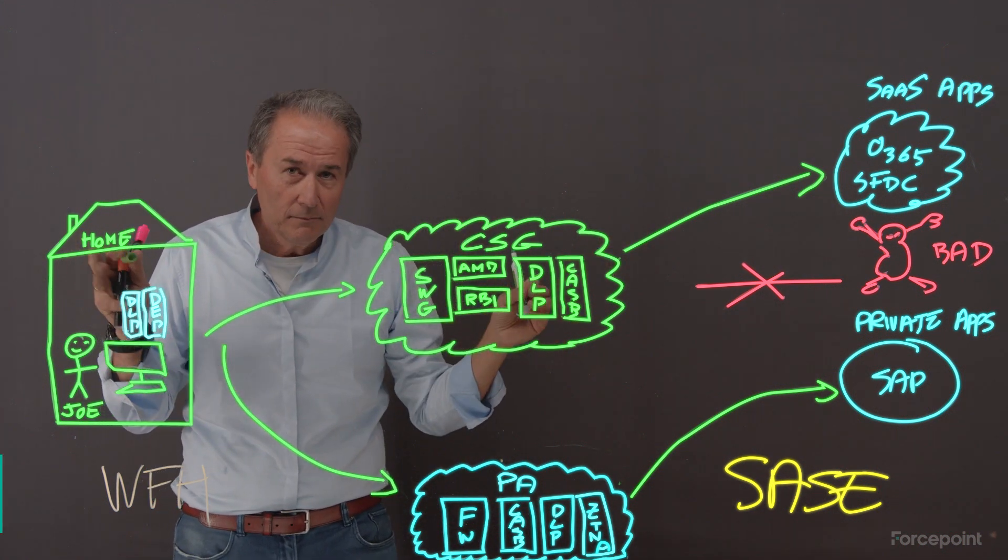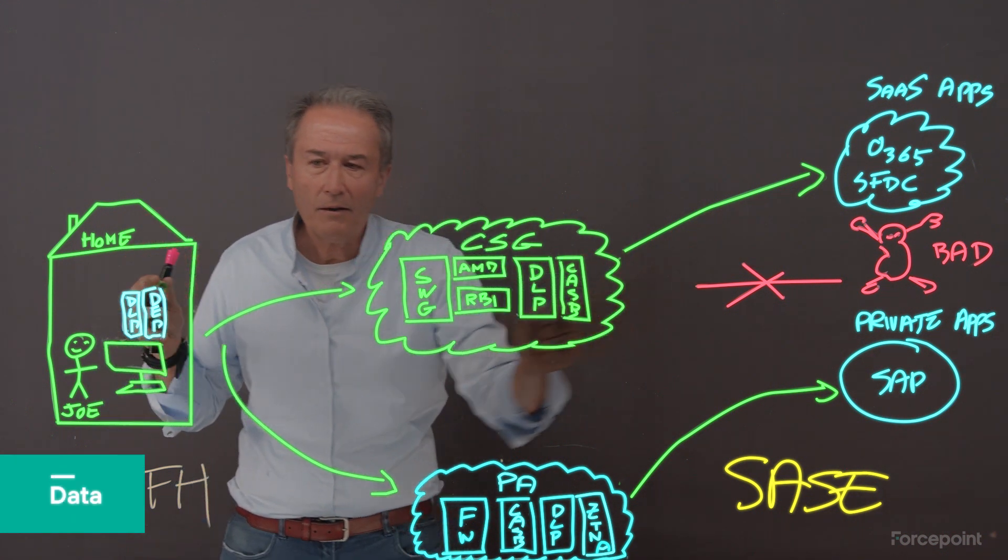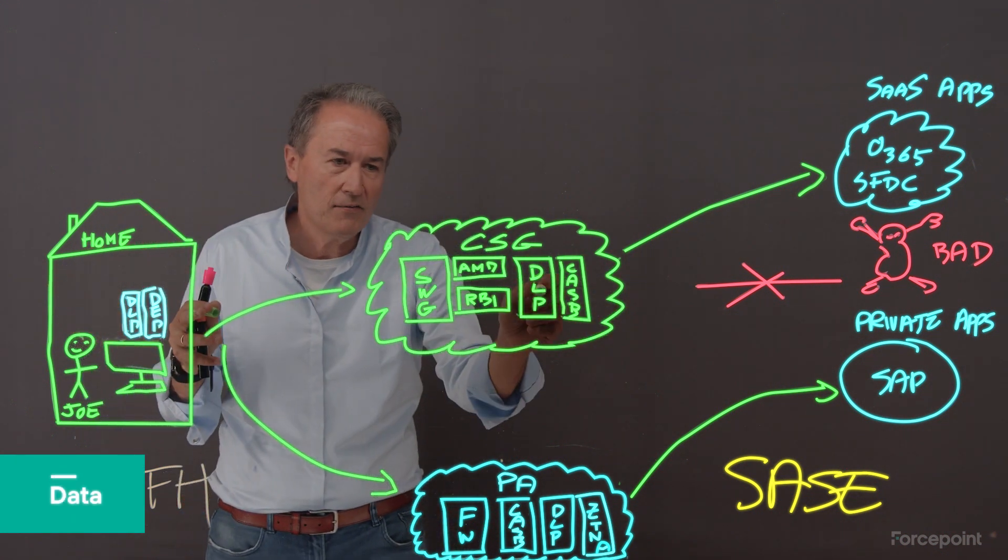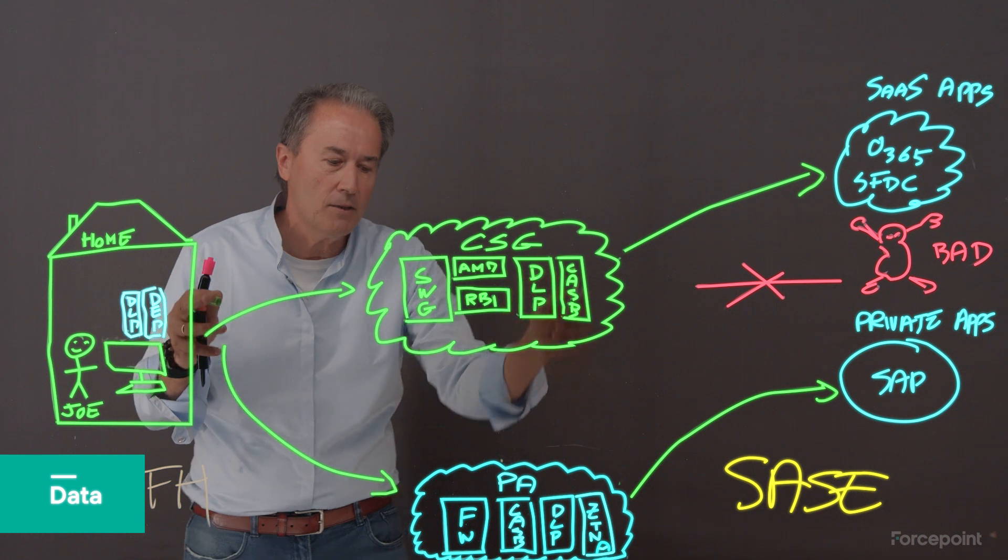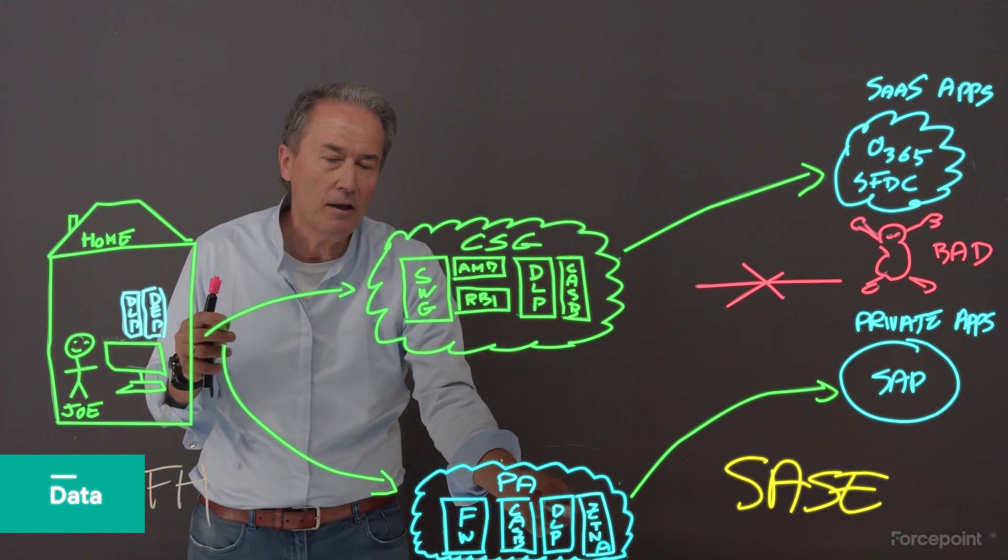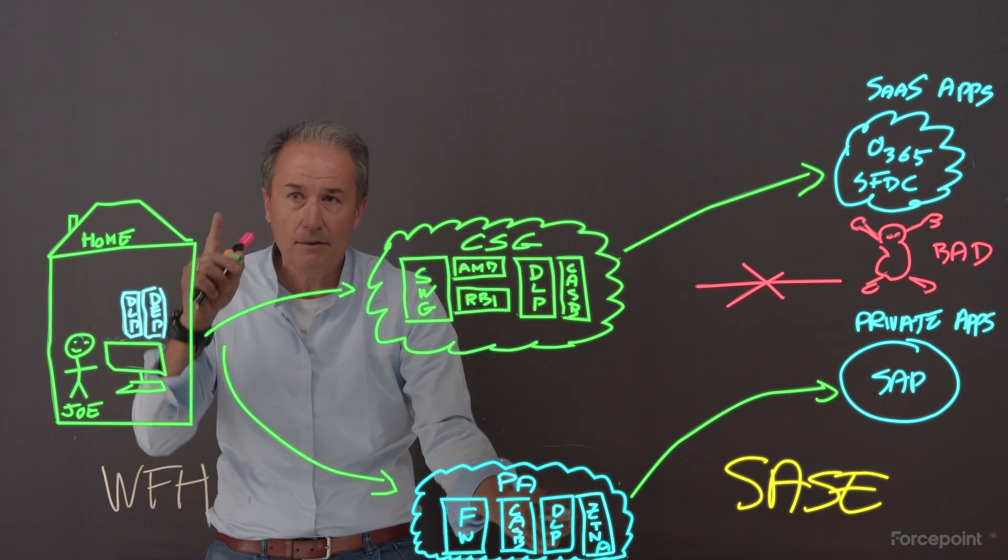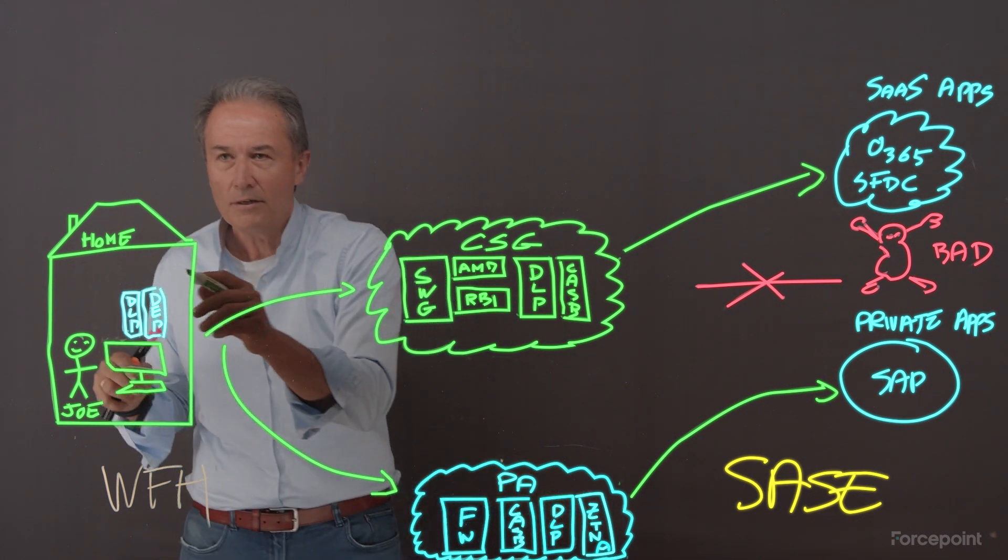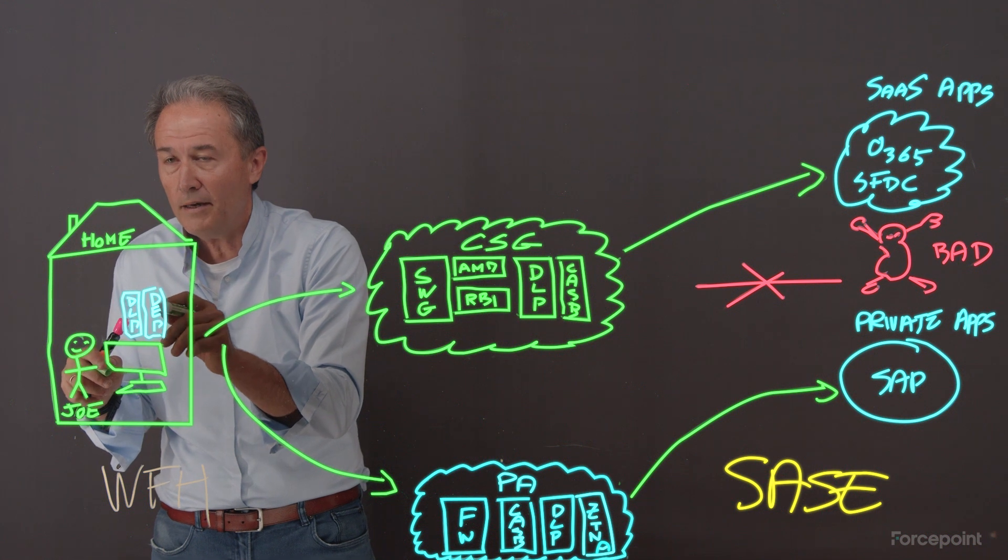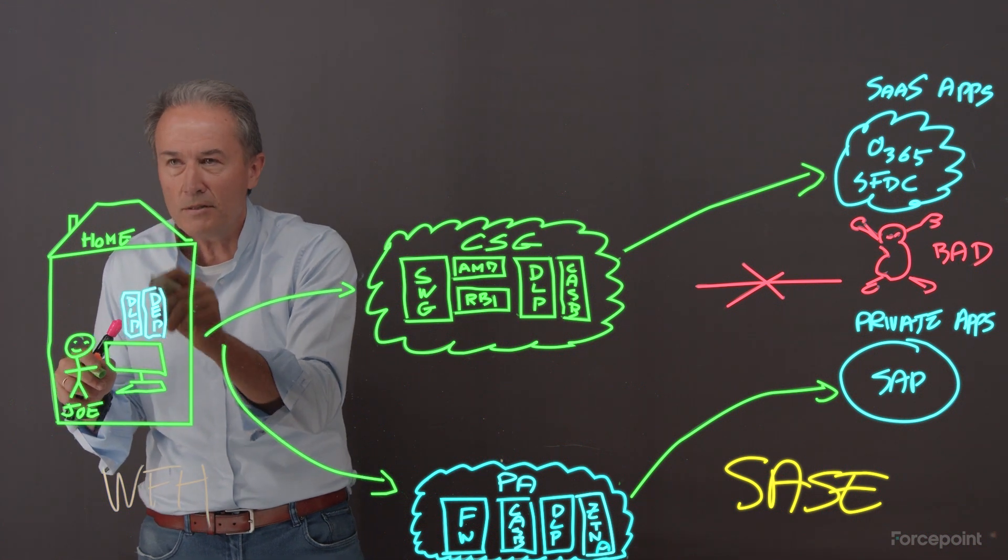Third horsemen, the data. Now we got data coming to Joe's home. We have DLP in the cloud for the cloud security gateway and soon DLP in the cloud for the VPN replacement, the Zero Trust Network access. And last but not least, you also want to protect the data when it's within Joe's home. You need the DLP agent.